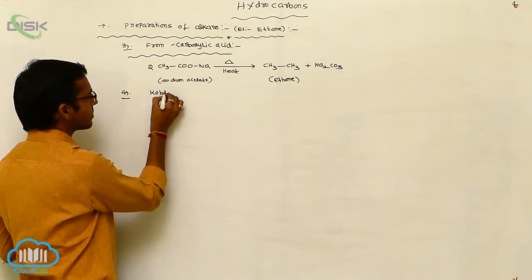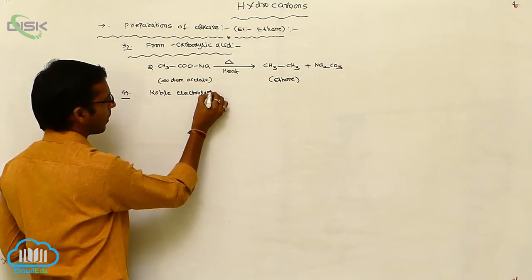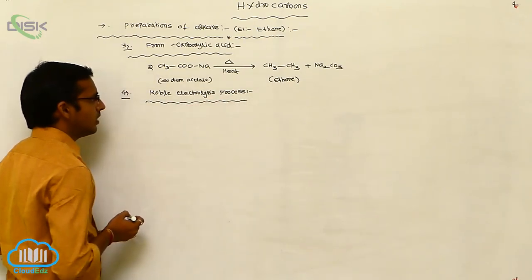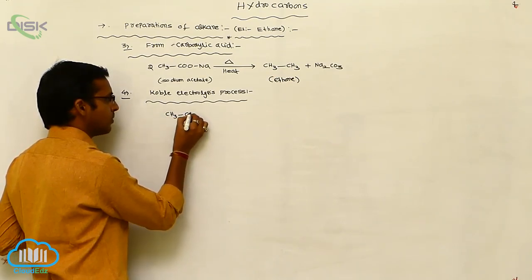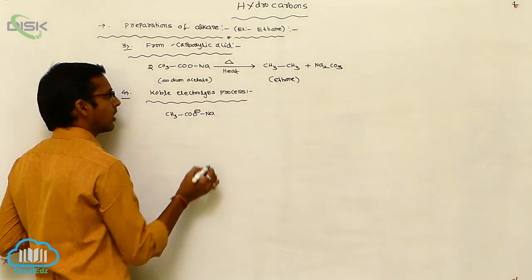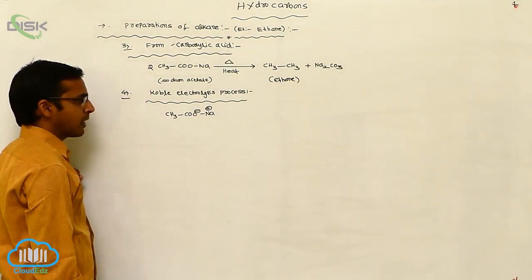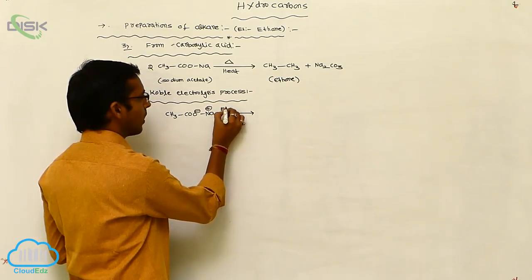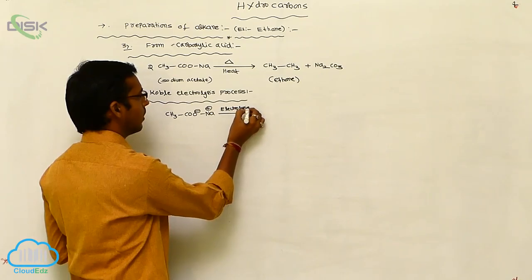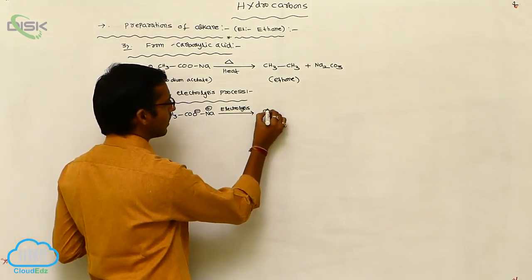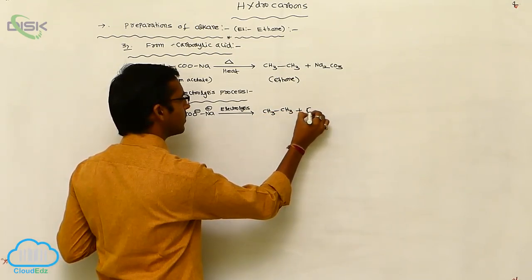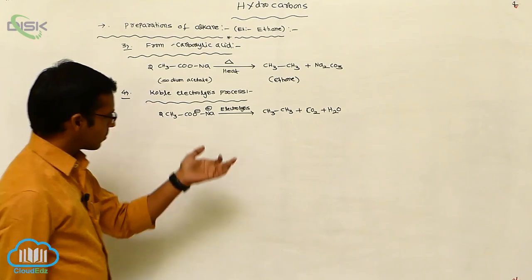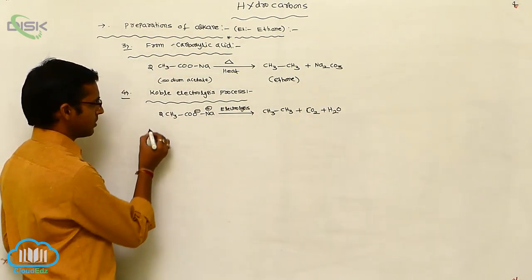The next method is Kolbe electrolysis. In the Kolbe electrolysis process, the sodium or potassium salt of carboxylic acid (CH₃COO⁻), in the presence of electricity applied by electrolysis, gives ethane. The remaining products are CO₂ plus H₂O — carbon dioxide and water. Let's see the mechanism of this process.